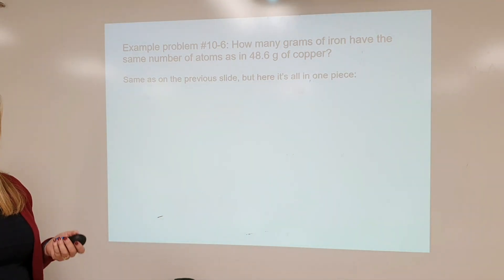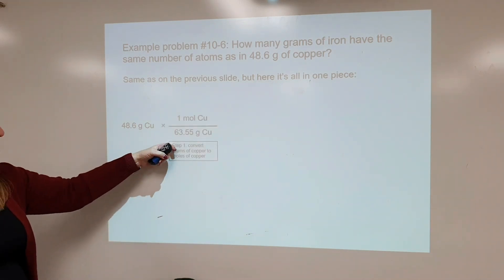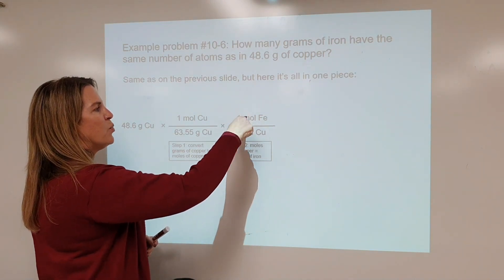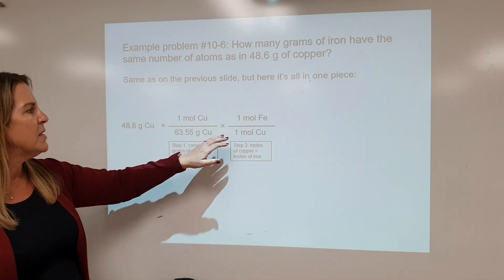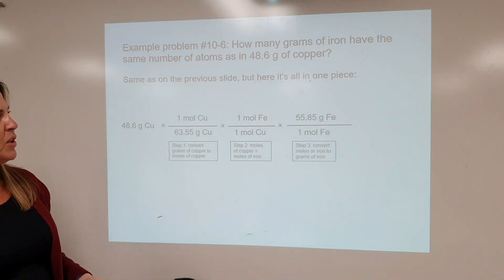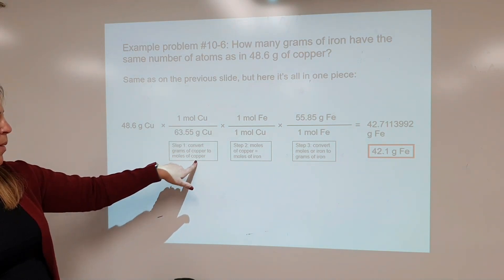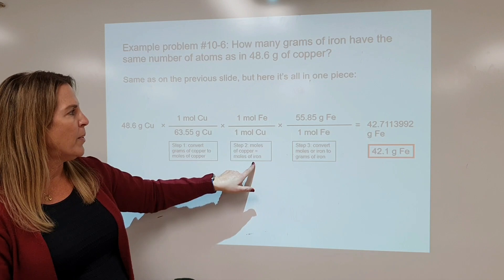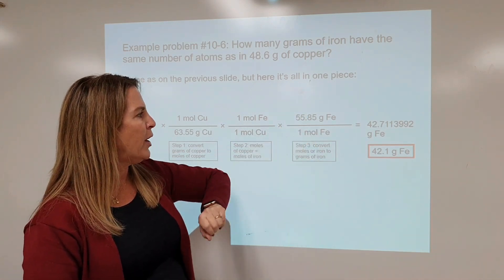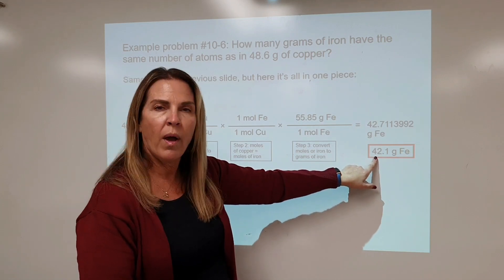Here, same as the previous slide, we want to write this a second way — there's more than one way to do these problems. Starting with 48.6 grams of copper, use the molar mass to go to moles. One mole of copper has the same number of atoms as one mole of Fe — that relationship allows copper to cancel and puts us in moles of iron. Then use the molar mass to go to grams. Step one: grams of copper to moles of copper. Step two: moles of copper to moles of iron. Step three: moles of iron to grams of iron. The answer is 48.6 grams of copper has the same number of atoms as 42.1 grams of iron.